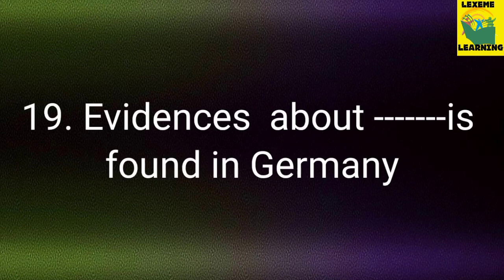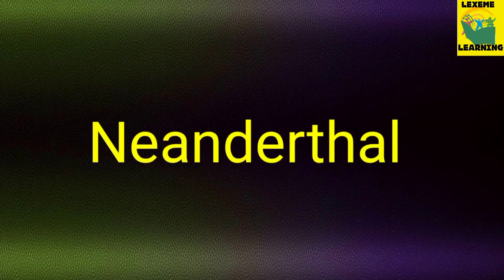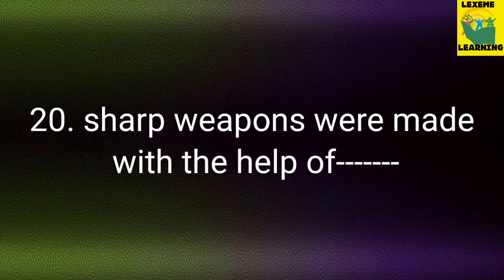Question number 19: Evidences about dash are found in Germany. Your answer: Neanderthal. Question number 20: Sharp weapons were made with the help of dash, during the prehistoric period. Your answer: flint.